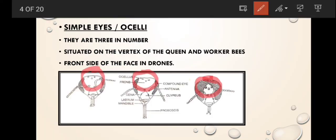Simple eyes: these are three in number, which are situated on the vertex of queen and workers, but which is present on the front side of the drones.